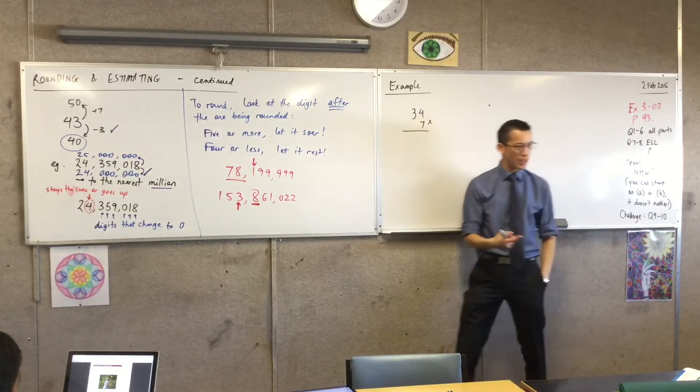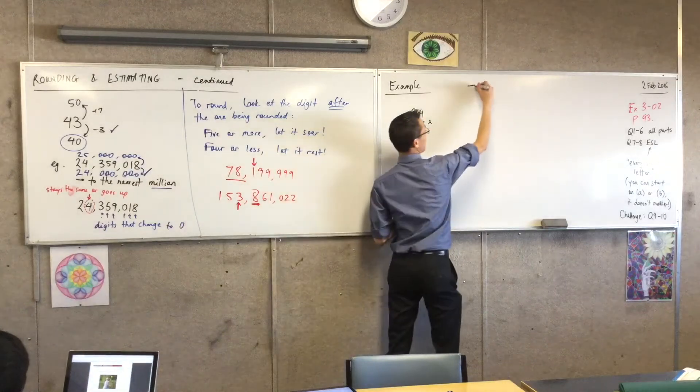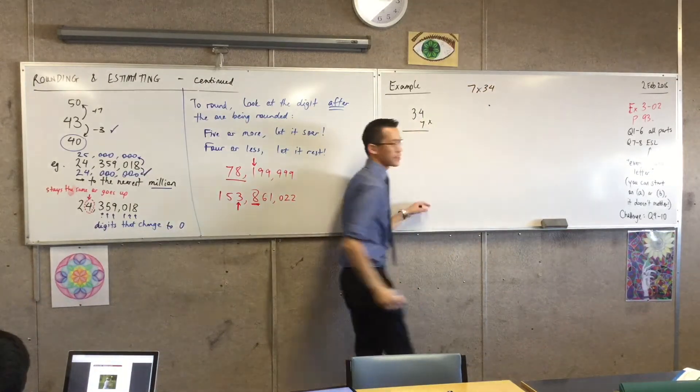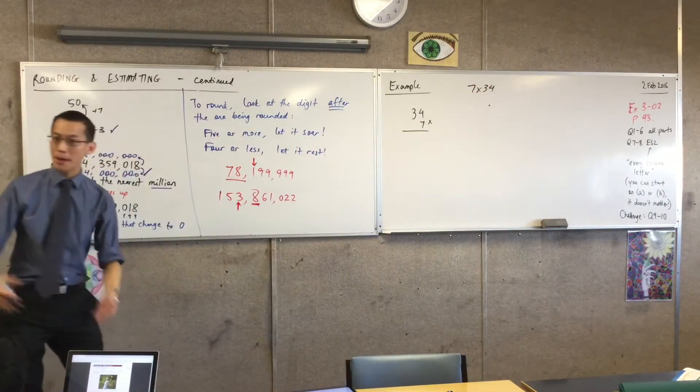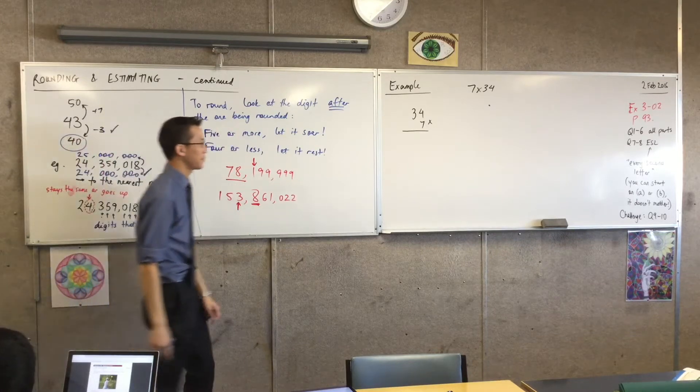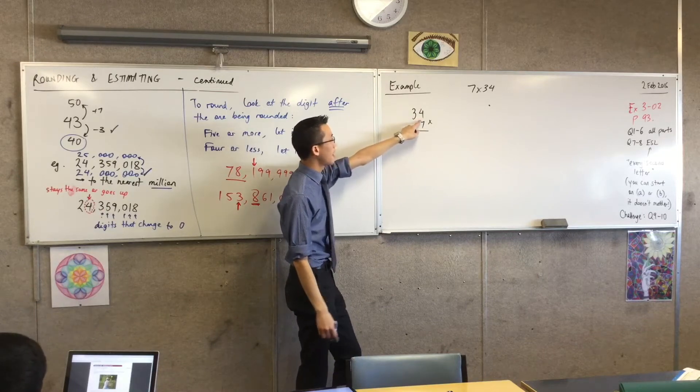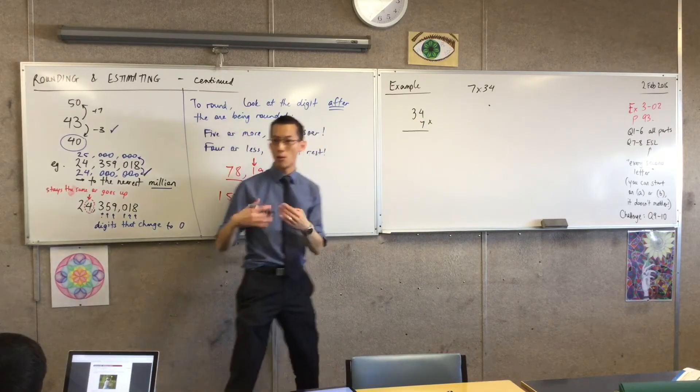34 times 7. You may not have seen multiplication set out like this before. You might just see it all on one line, like this. But the whole idea is to make it a bit more logical and systematic and make sure I don't miss any parts of the question. So the reason they've set it out like this is to show I've got two different parts of 34 that I'm going to multiply one at a time.